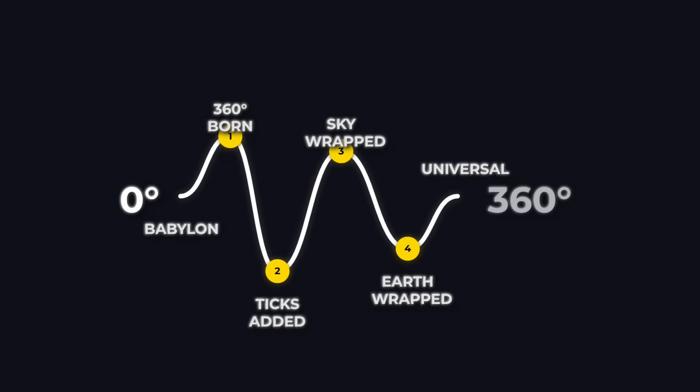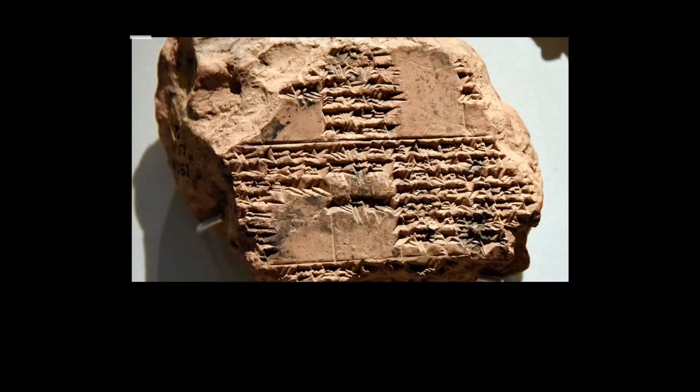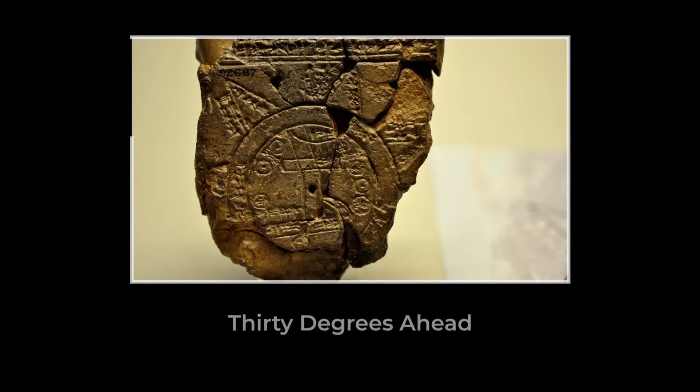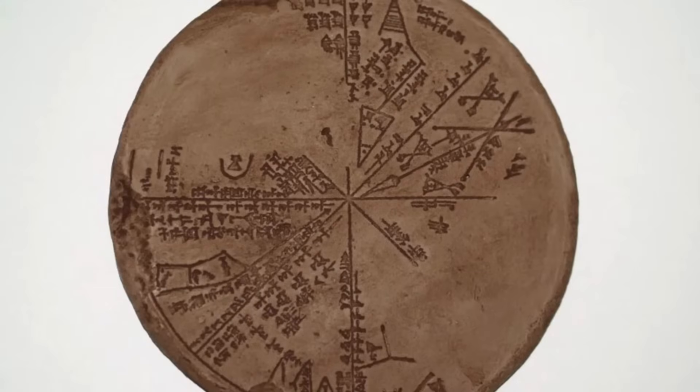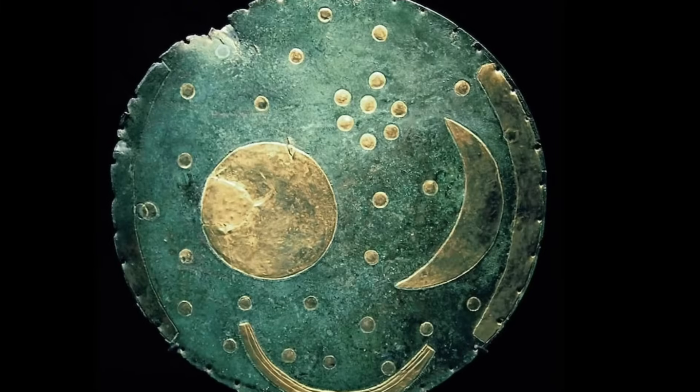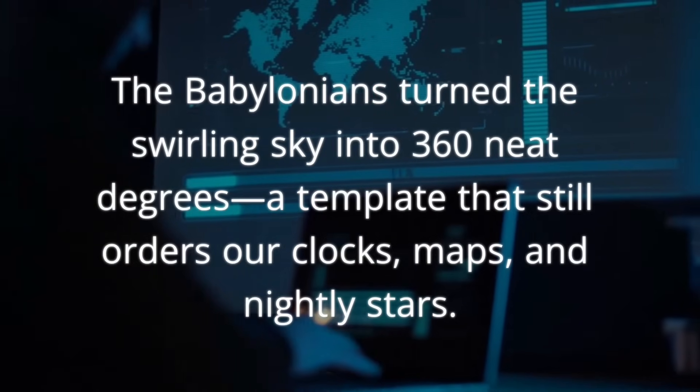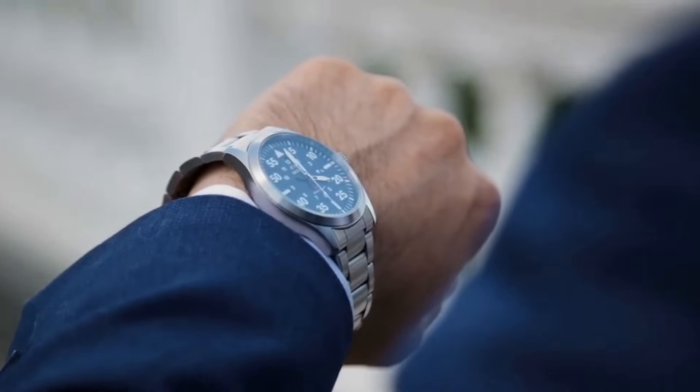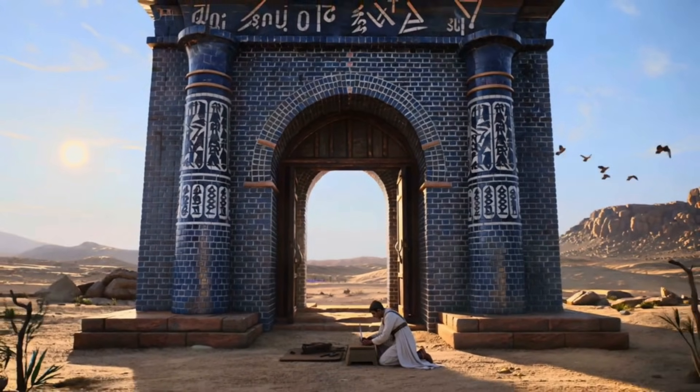Think of the circle as a universal measuring tape, one that wraps around both the sky and the earth. By marrying arithmetic with the cycles of the sky, they created a system that still shapes how we tell time and measure space. The 360-degree circle is more than an ancient artifact. It's the silent structure behind every clock face, every map, and every star chart. Even today, when you glance at a watch or trace a path on a globe, you're using the same slices of the circle that once guided Babylonian astronomers through the night.